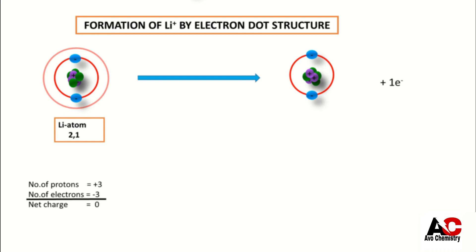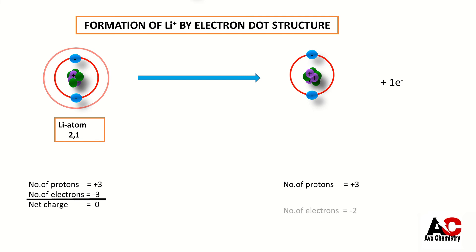Now the number of protons are plus 3, but number of electrons are now minus 2 because one electron has been removed. So net charge is now plus 1.